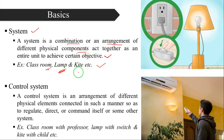A kite is made up of paper and some other materials, so it is also a system. A system means it is a combination or arrangement of different physical components to achieve a certain objective.